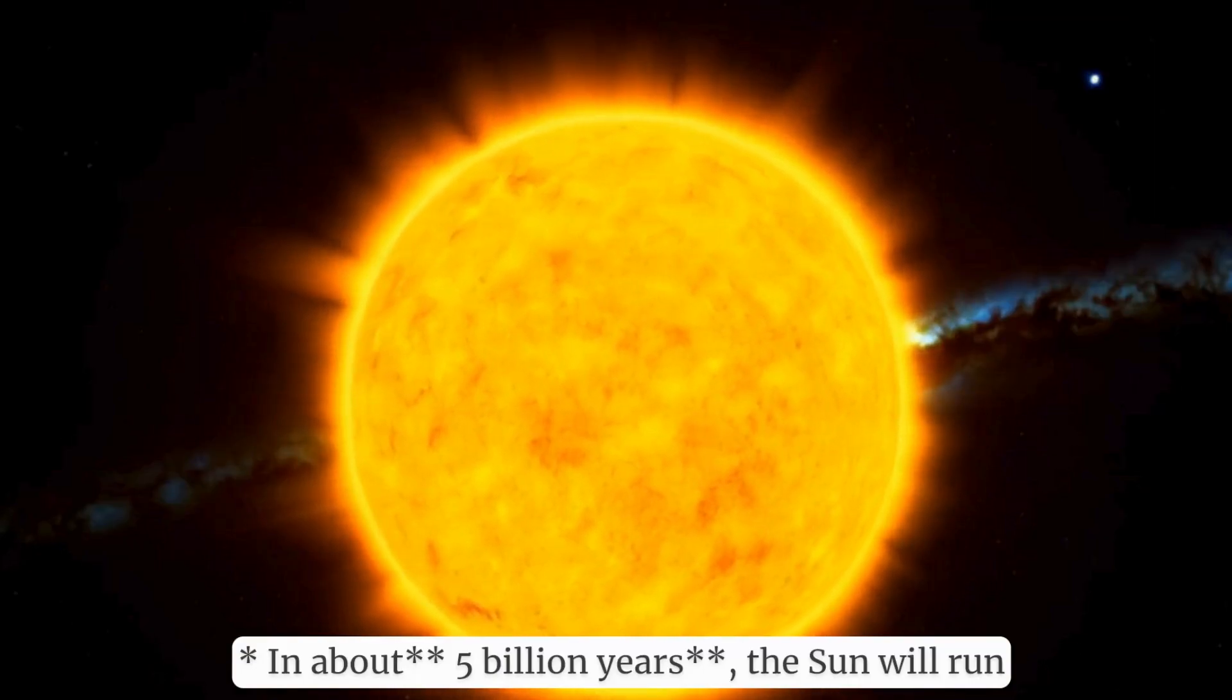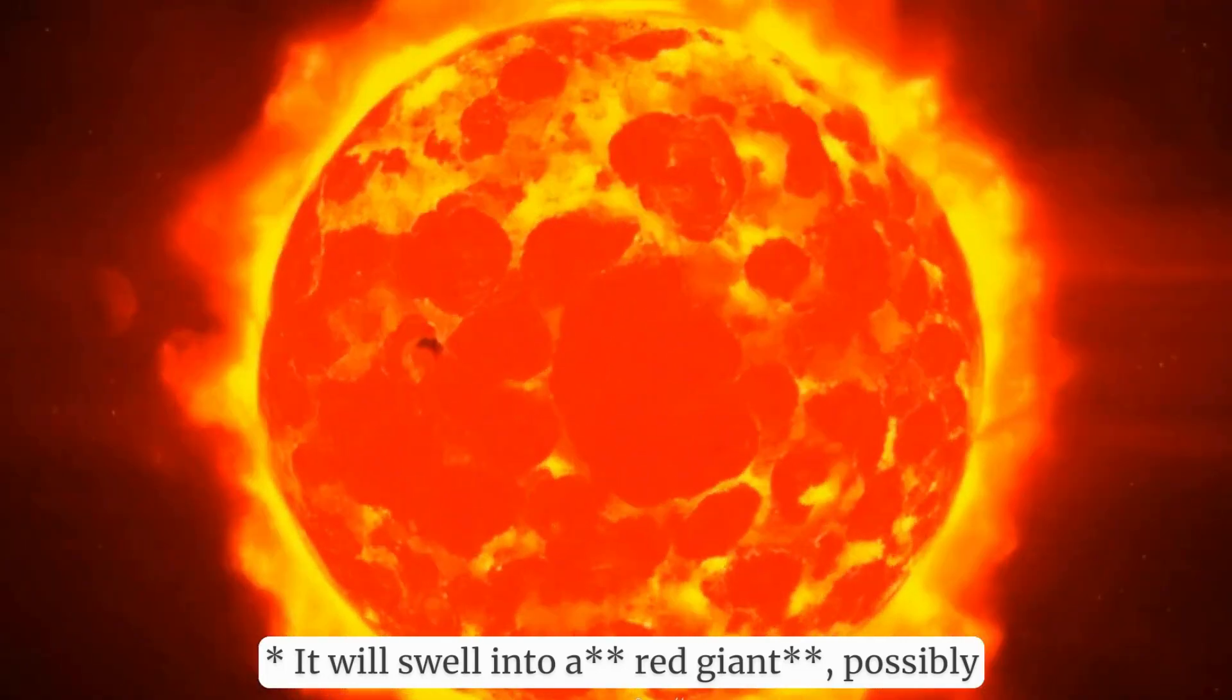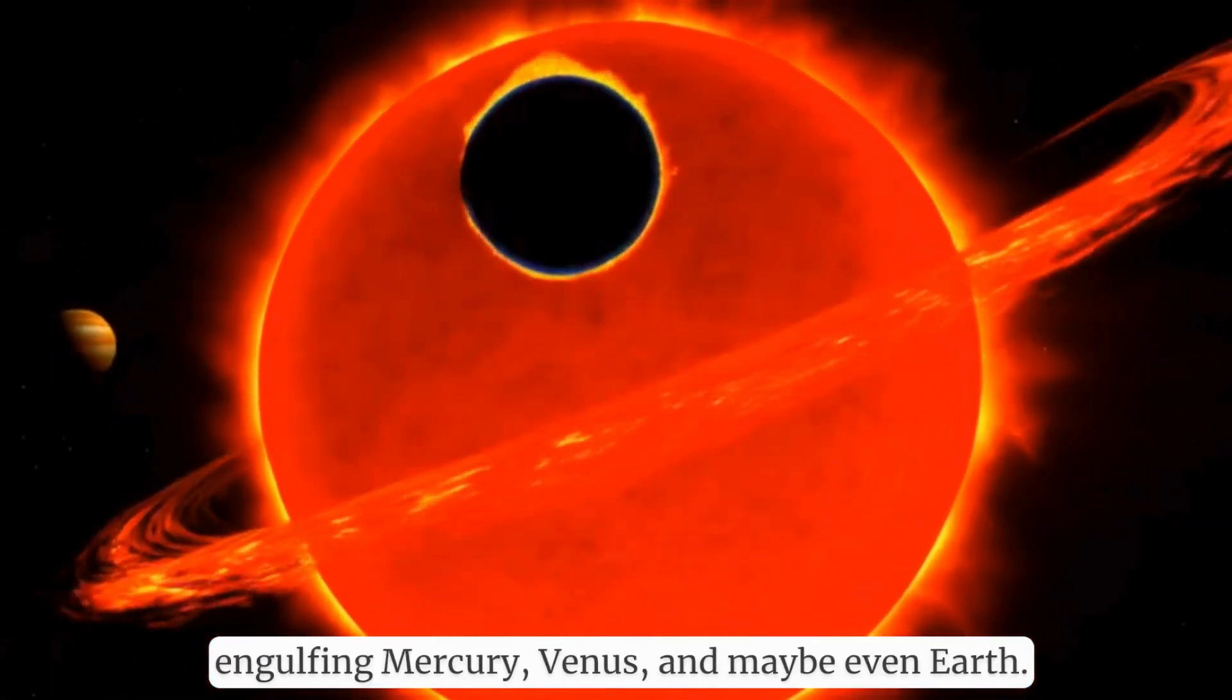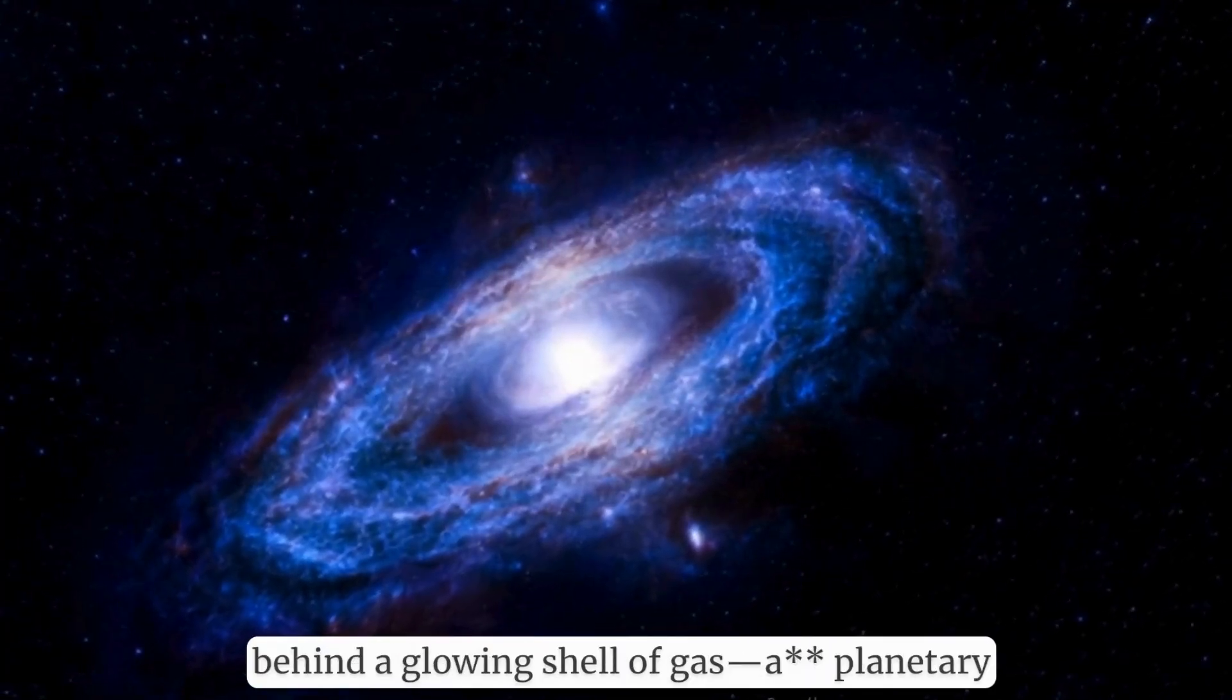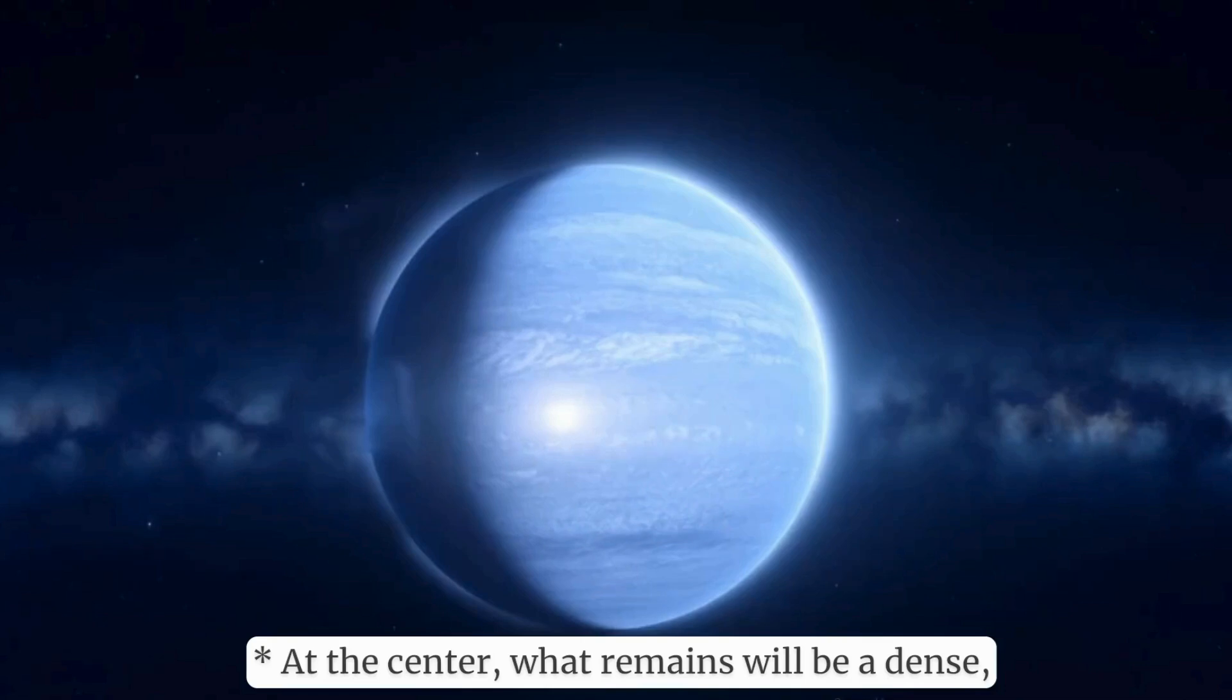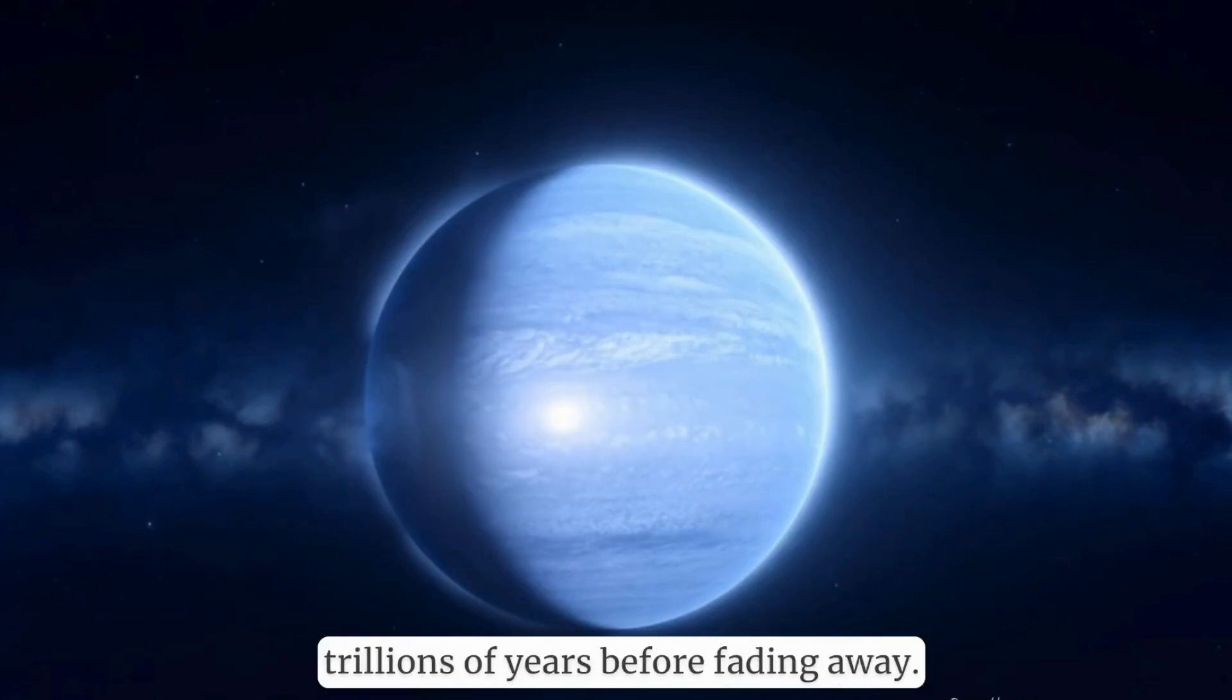In about five billion years, the Sun will run out of hydrogen in its core. It will swell into a red giant, possibly engulfing Mercury, Venus, and maybe even Earth. After shedding its outer layers, it will leave behind a glowing shell of gas, a planetary nebula. At the center, what remains will be a dense, Earth-sized white dwarf, glowing faintly for trillions of years before fading away.